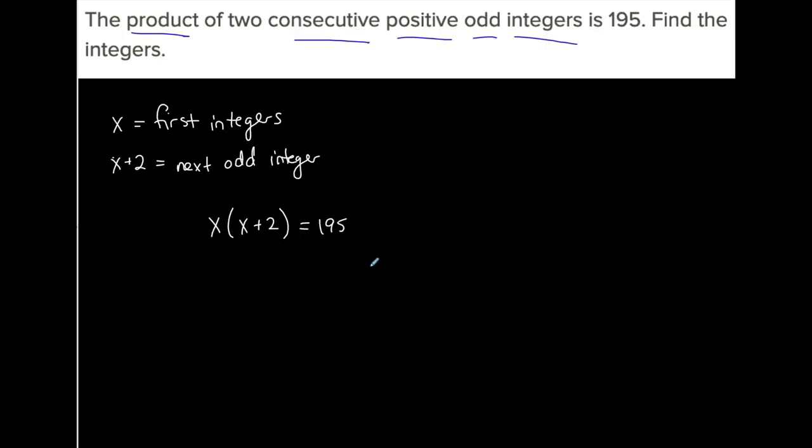How do we solve the equation? We're going to simplify. We have a product of X and (X plus two), so we have to distribute the X to simplify the left-hand side. When we do that, we get X squared plus 2X equals 195. I have a quadratic equation that popped up.